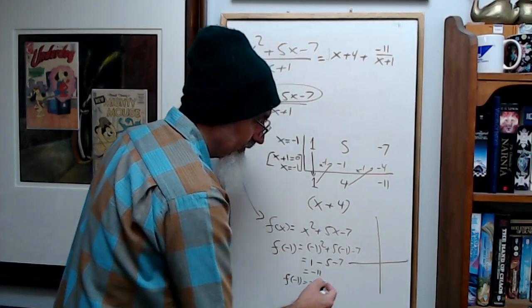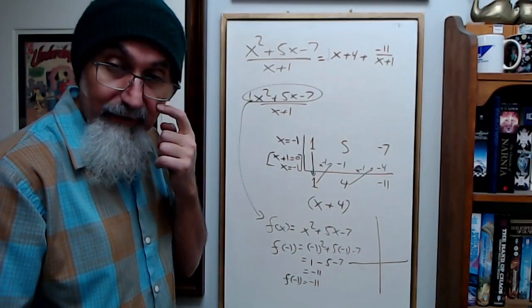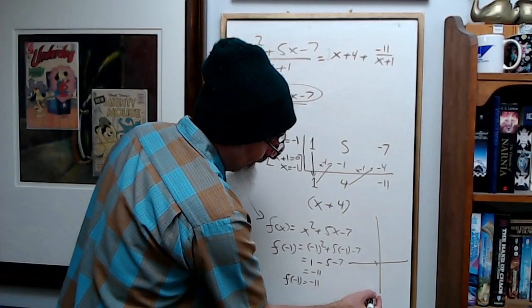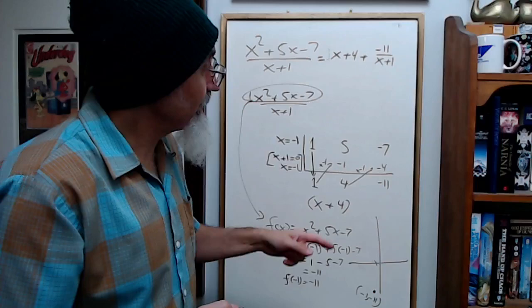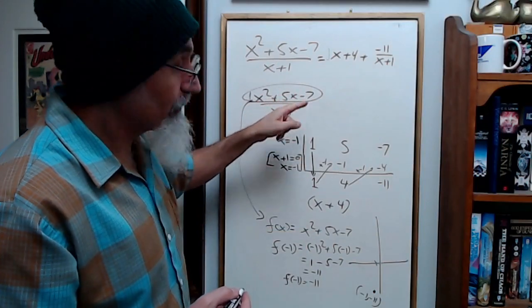So you just went f of negative 1 equals negative 11. So on a grid, negative 1 and negative 11 is a point on this graph.